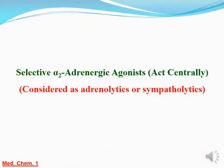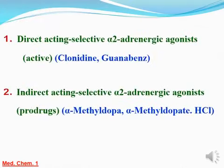الكلاس التالت هو الـ selective alpha-2 adrenergic agonist. الـ selective alpha-2 adrenergic agonists دول act centrally، وبيقللوا الـ release of norepinephrine. عشان كده رغم إنهم agonists إلا إن تأثيرهم مماثل للـ antagonist، لأن تأثيرهم يعتبر sympatholytic أو adrenolytic، لأنها بتقلل الـ release of norepinephrine from its storage vessels at the sympathetic nerve terminals.